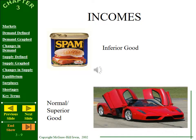Income affects the demand curve as well. Normal goods have a direct relationship with income — as your income goes up, demand goes up. Most goods are normal goods: cars, homes, trips, new clothes, restaurant meals. However, inferior goods have an inverse relationship with income. As your income goes up, you tend to buy less of these — things like Spam, retread tires, or used clothing from Goodwill.